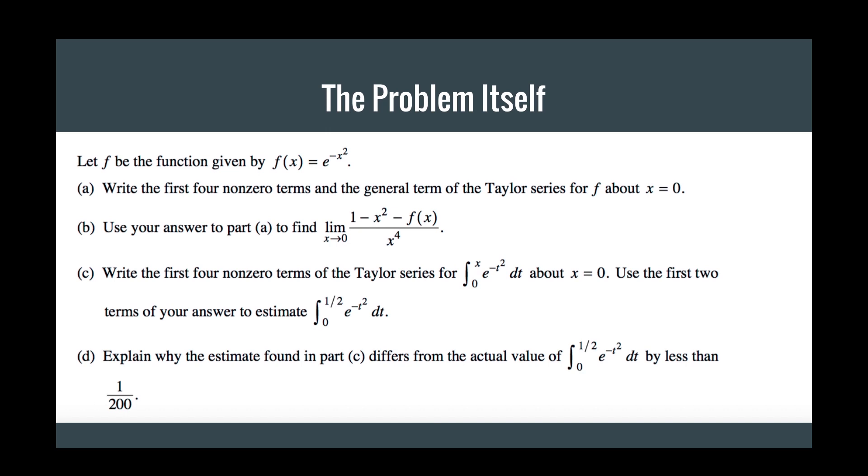So here is the problem itself. You might want to stop the video here or pause it and go over the problem, look at it, and try and solve some of the questions you can by yourself. But basically what the problem is asking is what is the Taylor series for f of x equals e to the negative x squared, and then just apply that over throughout the problem.